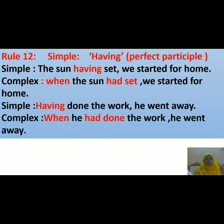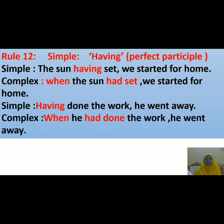Now, there is another kind of participle called the perfect participle. If you find 'having' plus the past participle of the verb, it is called a perfect participle. Look at this example: 'The sun having set, we started for home.' This phrase must be turned into a clause: 'When the sun had set, we started for home.' Here you add 'when', then the subject, then 'had' in place of 'having', and then the past participle. The second clause remains unchanged. Another example: 'Having done the work, he went away.' In the complex form: 'When he had done the work, he went away.'